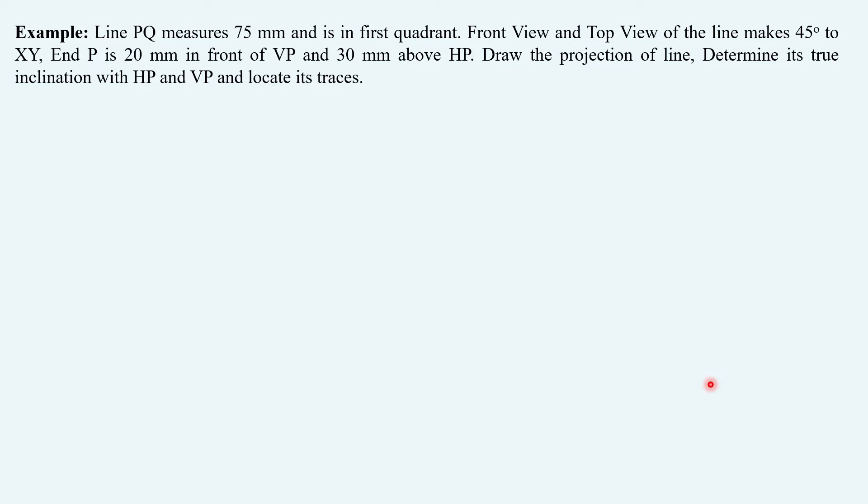Let's extract the given data first. Line PQ, true length equals 75 mm. Alpha and beta both are 45 degrees. End point location of P is 20 mm above HP and 30 mm in front of VP.